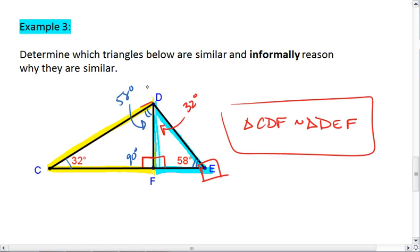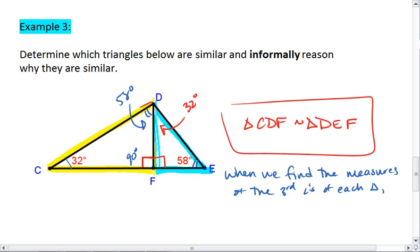The reasoning for this, as we can see in our picture, is that when we find the measures of the third angles of each triangle, we see that the triangles have congruent angles.